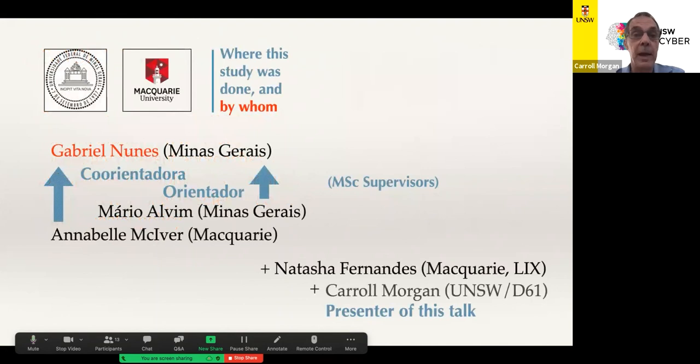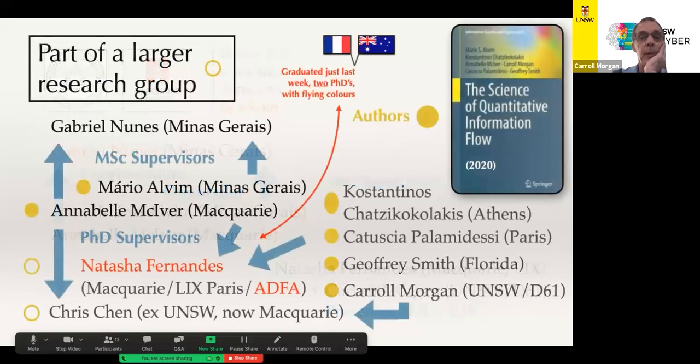So this is basically the end of the talk. I want to make it clear who did this. It was basically one person, Gabriel Nunes, who's an MSc student in Minas Gerais, that's a province of Brazil. His supervisors were Mario Alvim, also there, and Professor Annabel McIver who is here at Macquarie. Those words there are the Brazilian words for a supervisor and co-supervisor. But also working on there are Natasha Fernandez, who's here at Macquarie University but also at INRIA in Paris, and me, and we will be publishing something about this very soon.